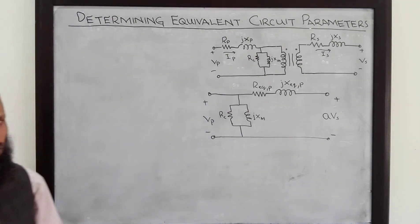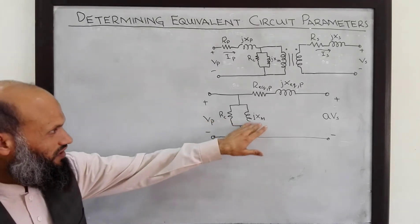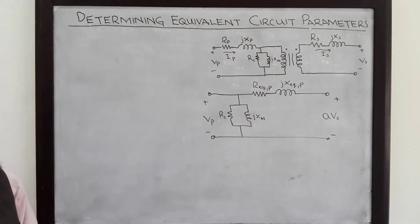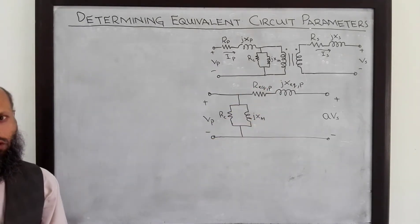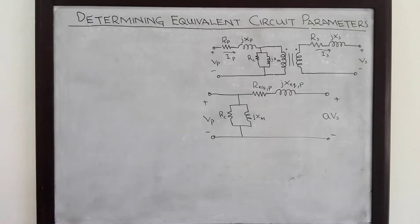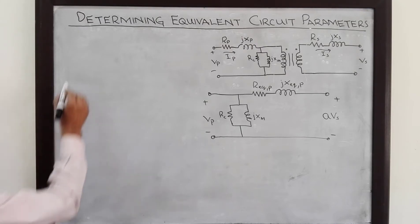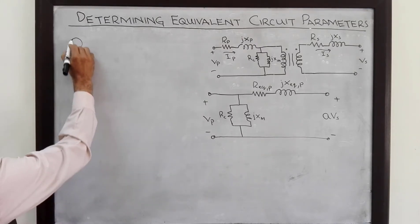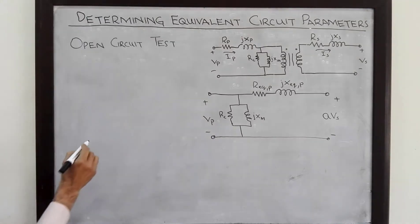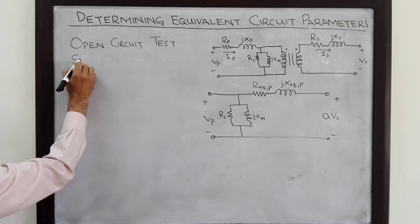Now the question is how to determine these parameters for a transformer. These parameters are determined experimentally, and two tests are performed on the transformer to determine them. These tests are the open circuit test and the short circuit test.